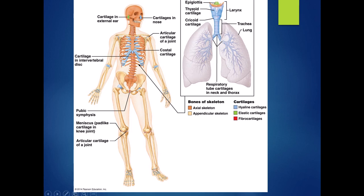Elastic cartilage is the least abundant of the cartilaginous tissues. We find it only in two places: the external ear and the epiglottis, which is the flap that closes over your airways so that food goes down your esophagus and not your airway. Fibrocartilage is found where we put a lot of stress on our bones: the pubic symphysis between the two pubic bones, the intervertebral discs between the vertebrae, and the knee menisci between the thigh and leg. These are all places where thick pads of fibrocartilage are very helpful.